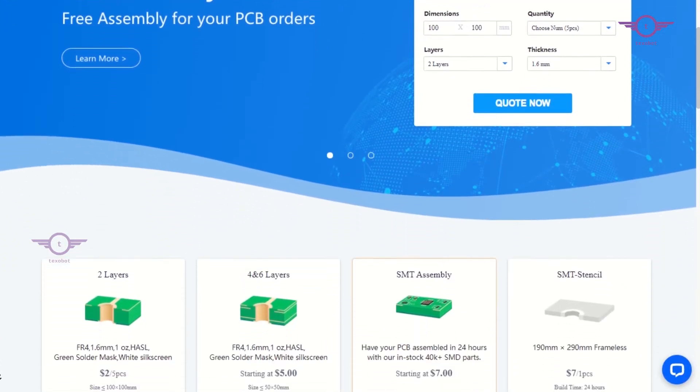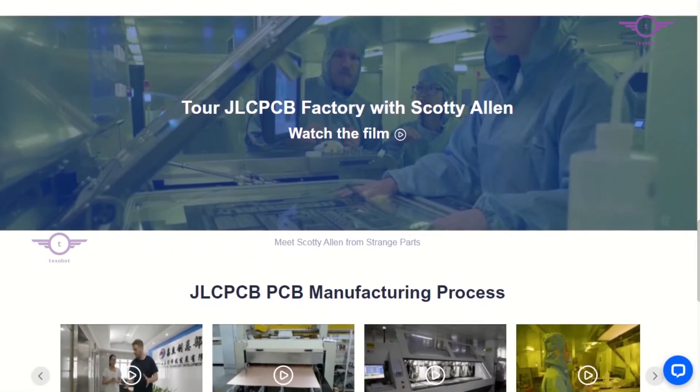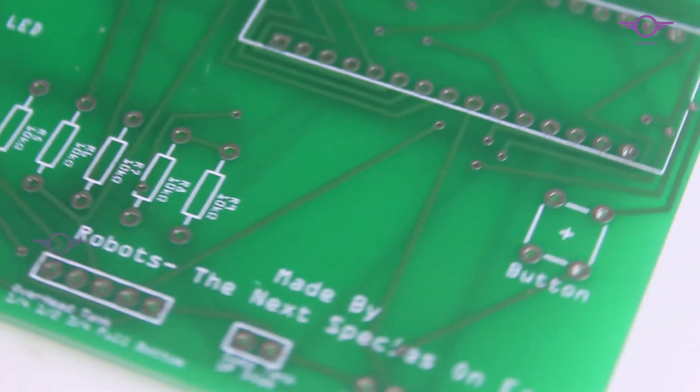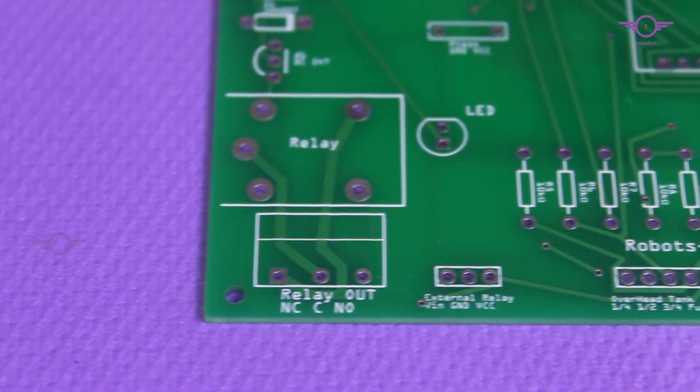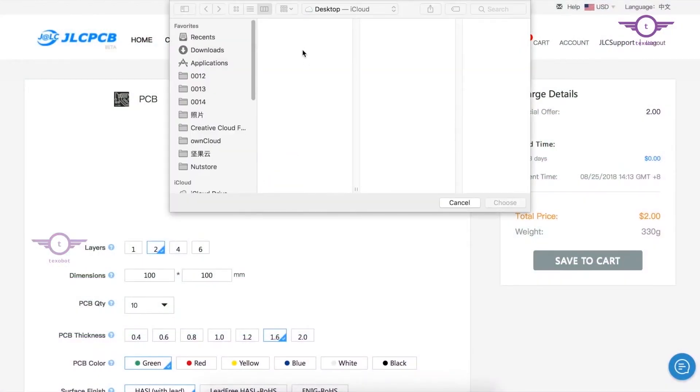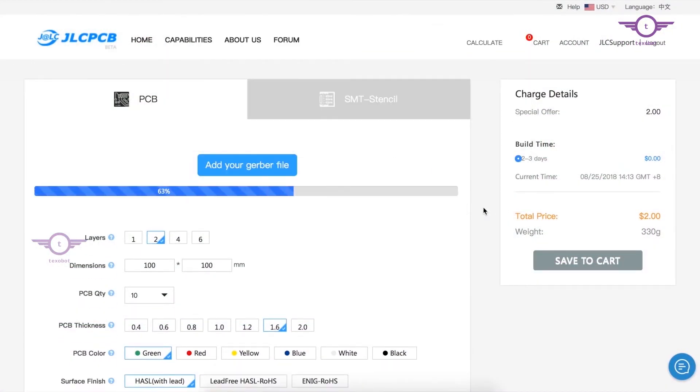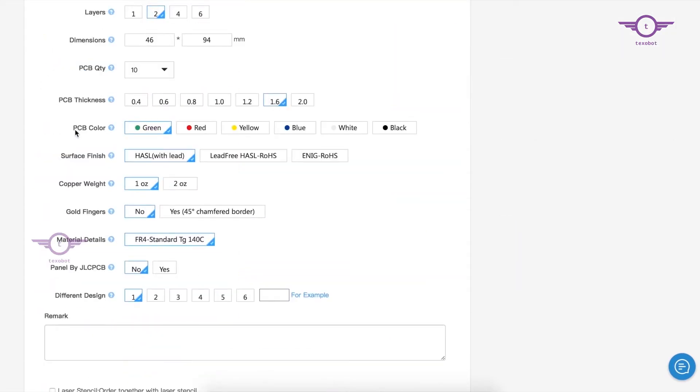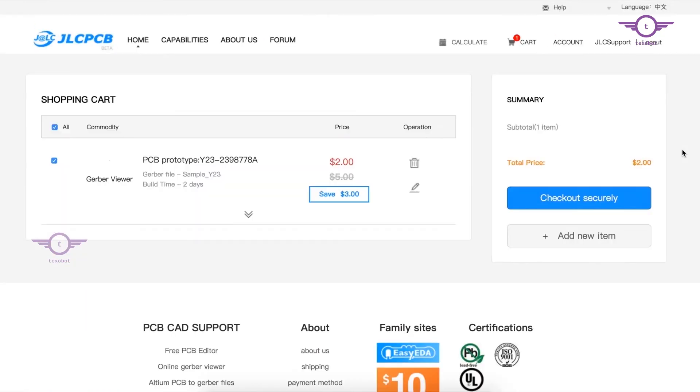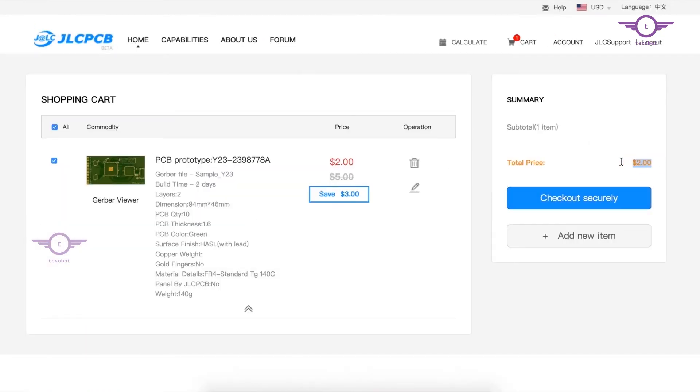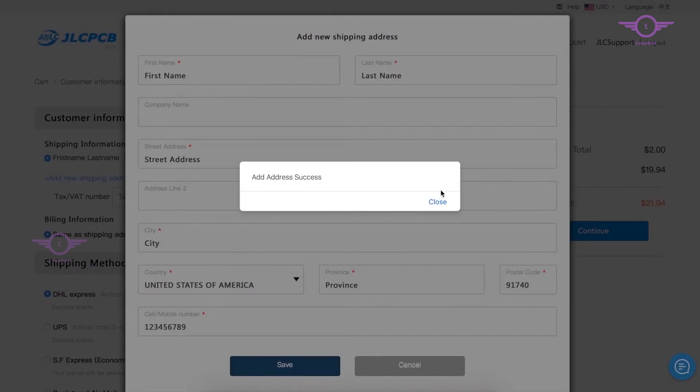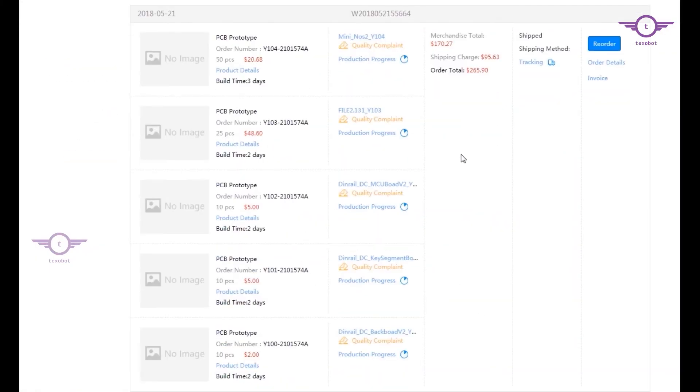Then we ordered the PCB from JLCPCB which are also the sponsor of this video. JLCPCB is a manufacturer of high quality PCBs which are used in many industries for prototyping as well as DIY projects. Once you have your PCB design ready, simply upload the Gerber file, select the property you want and order your PCBs at a reasonable price. If it is your first order from JLCPCB, you can get up to 5 PCBs only for $2. Please contact us if you would like to have the Gerber file that we have used in this project. Contact details are in the description.